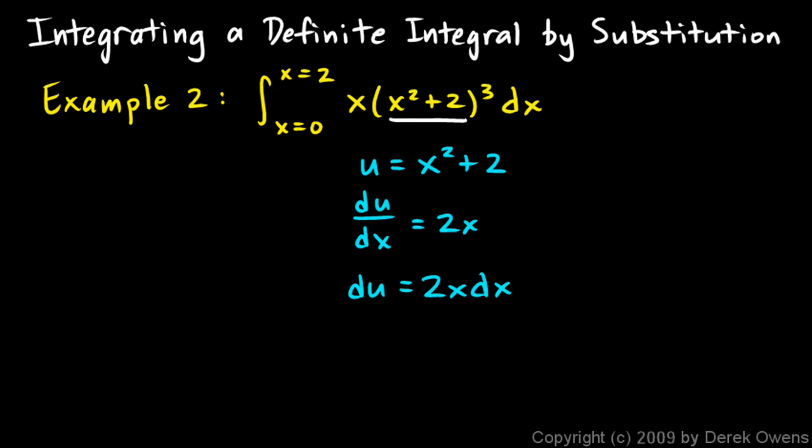Now compare this to what we have in our original expression. Look here, the x² + 2, that's right here. So this is u³. And then look what else we have, x dx. Look down here. The x dx is half of our du. So take note of all that. We have u³ and half of our du. So let's take our original integral and write it that way.